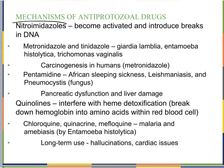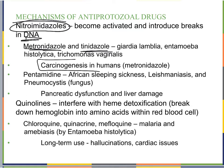We also have nitroimidazoles, which become activated inside the cell and introduce breaks in DNA, breaking apart the DNA. These can be used for Giardia lamblia, Entamoeba histolytica, and Trichomonas vaginalis. However, they are carcinogenic — producing carcinogens in humans — making them very dangerous. But when treating these infections, we balance those risks, and dosage is considered carefully.